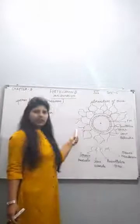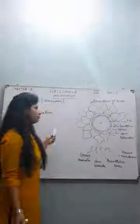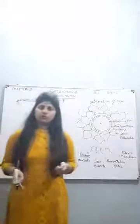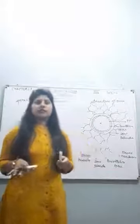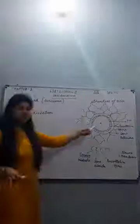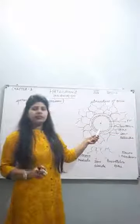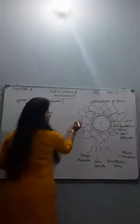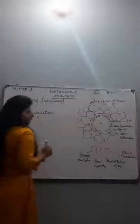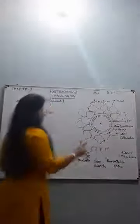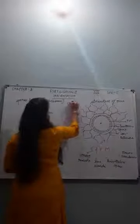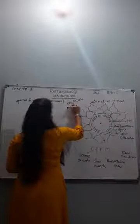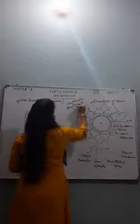Once the sperm head reaches the plasma membrane, the tail is shed off because swimming is no longer required. Only the head enters, releasing the nucleus and the centriole — which was present in the neck region. The centriole helps in the formation of spindle fibers for cell division.